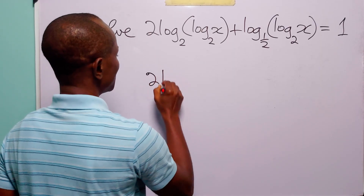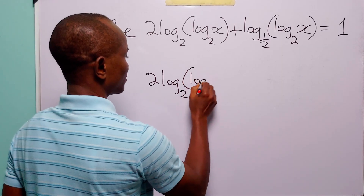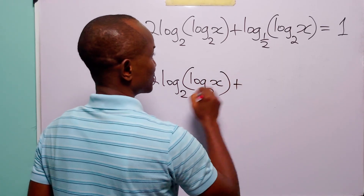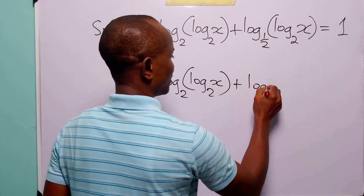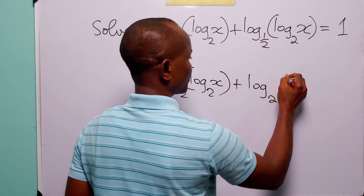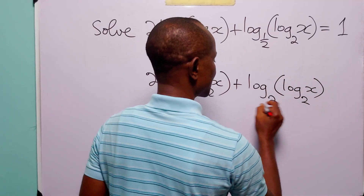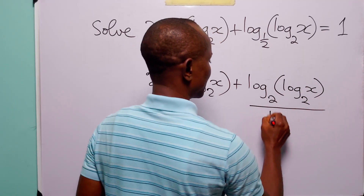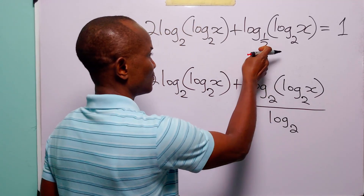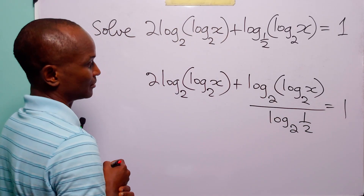2 times log base 2 of log base 2 of x, plus log base 2 of x divided by log base 2 of the old base, which is one-half. And of course this is equal to 1.